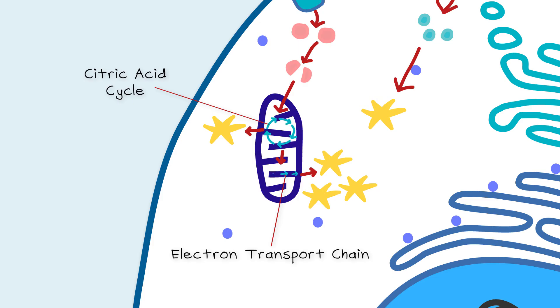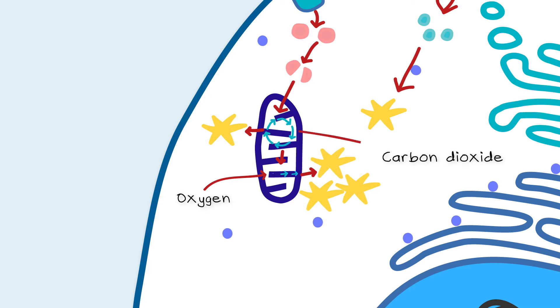These processes in the mitochondria use up oxygen, which we breathe in from the air and produce carbon dioxide that we breathe out. This energy can then be used to fuel different processes in the cell.